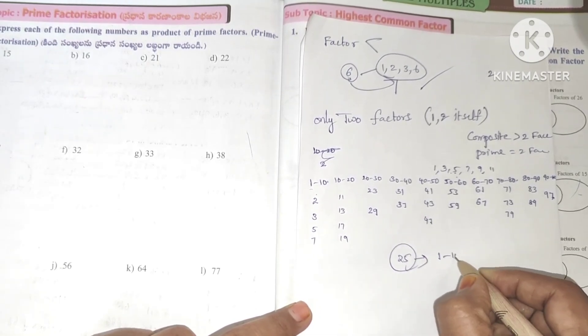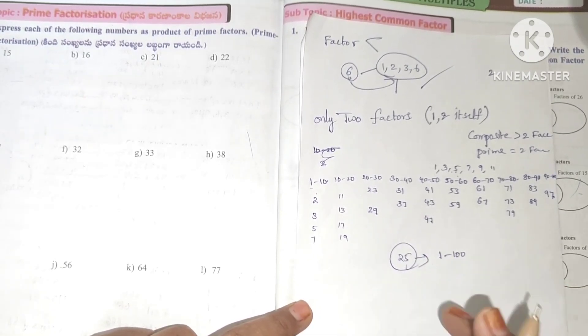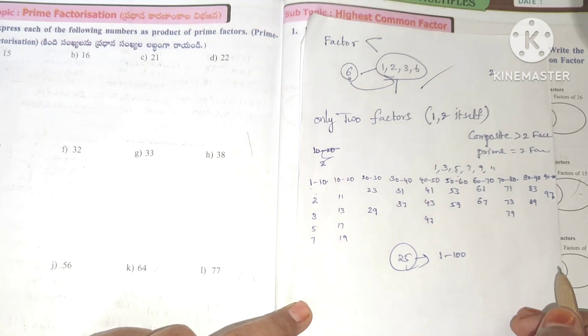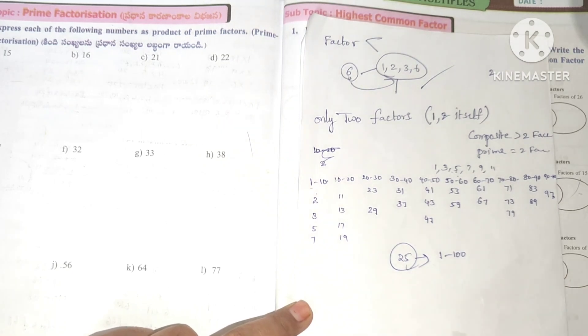From 50 to 60: 53 and 59. From 60 to 70: 61 and 67. From 70 to 80: 71, 73, 79. From 80 to 90: 83 and 89. From 90 to 100: 97. So total we have 25 prime numbers from 1 to 100.